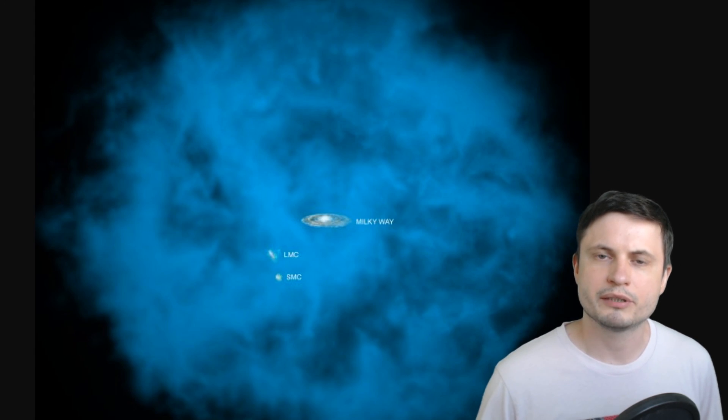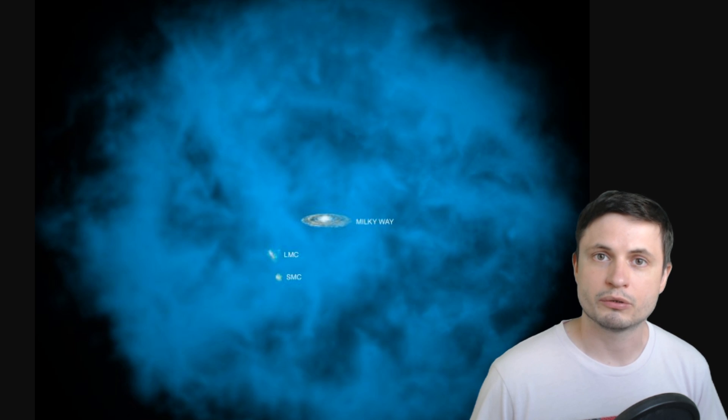suggest that the galactic halo of our own galaxy is even hotter than we initially thought. Specifically, it's like 10 times hotter. Here we're talking about 10 million degrees Kelvin, or essentially 18 million degrees Fahrenheit, which is about 5 times higher than the solar corona that I've previously mentioned.